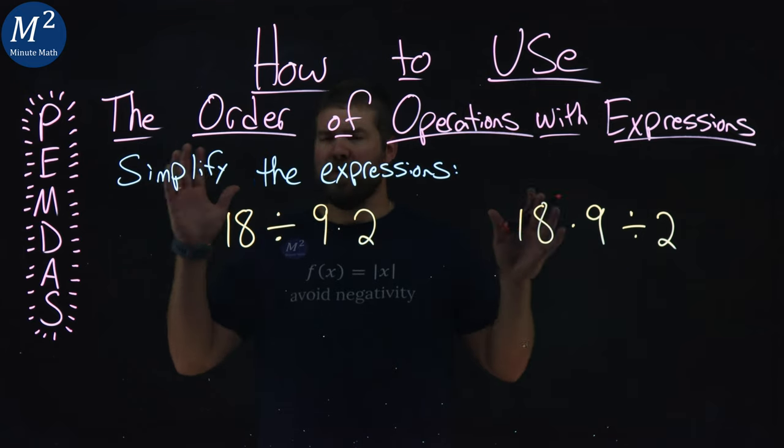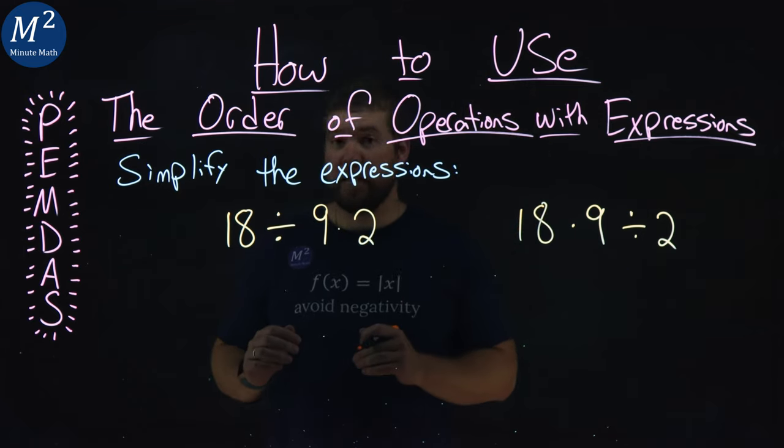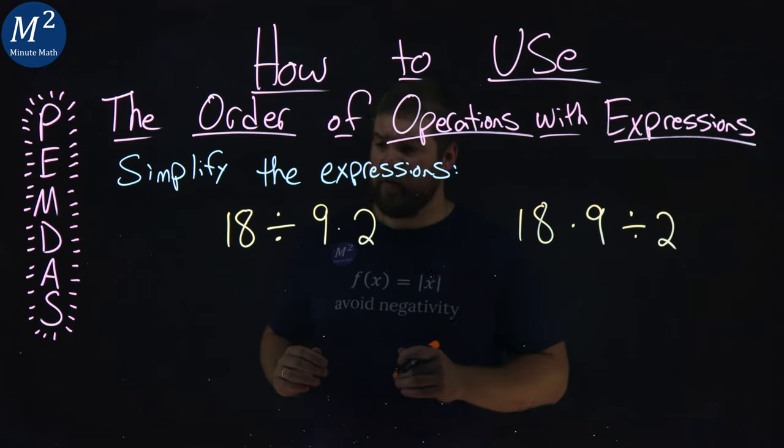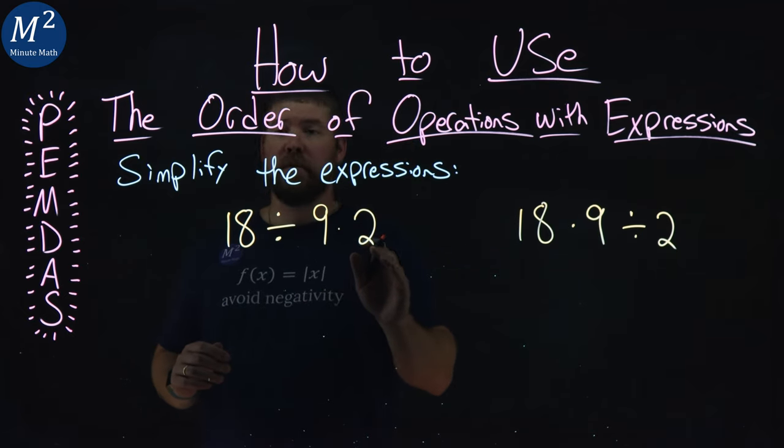We'll use our PEMDAS here to really understand how to simplify these expressions. Let's start with the left one here: 18 divided by 9 times 2.